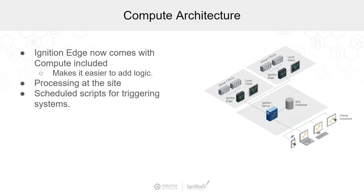That is now included with both Edge IIoT and Edge Panel. For example, picture an irrigation system where you need to make sure irrigation always runs, but your connectivity out into the field is inconsistent. Essentially, you still manage the schedules centrally, but then push them down to the Edge, and then they can run there locally — or whatever other logic you might want, like tag change scripts.